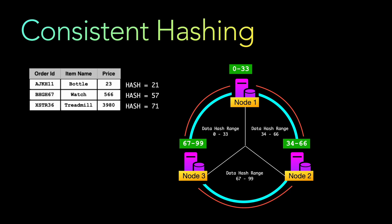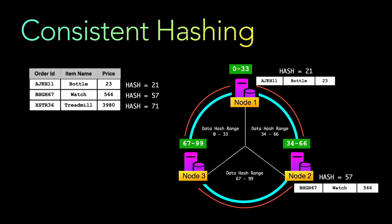The first record has a hash value of 21. Node 1 contains every record with a hash value between 0 to 33, and 21 is within that range, so the first record goes to node 1. The second record has a hash value of 57, so it gets persisted in node 2, which holds records with hash values between 34 and 66. Similarly, the third record with hash value 71 gets persisted in node 3, which has a hash range of 67 to 99. This is how data placement occurs — data gets persisted equally and consistently across the nodes.